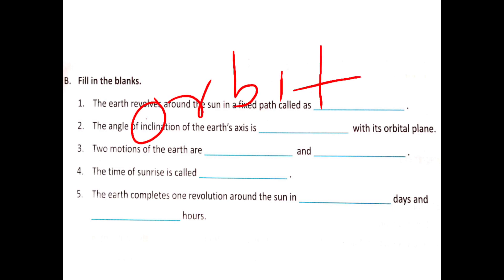Question 2: The angle of inclination of the Earth's axis is dash with its orbital plane. Then right answer is 66 and a half degree.